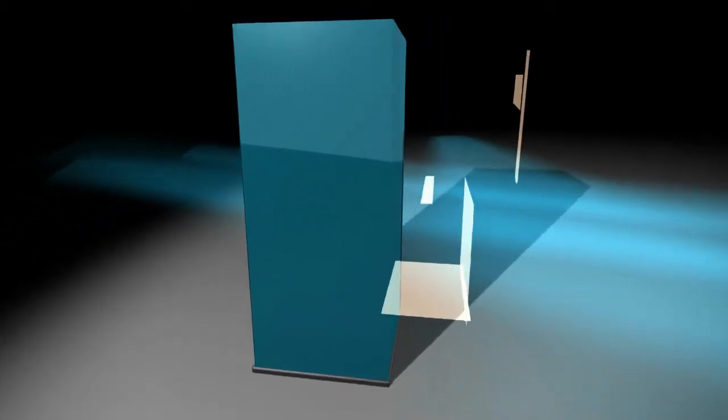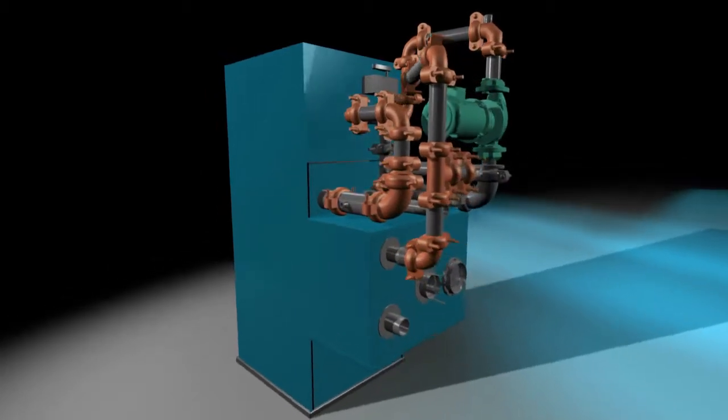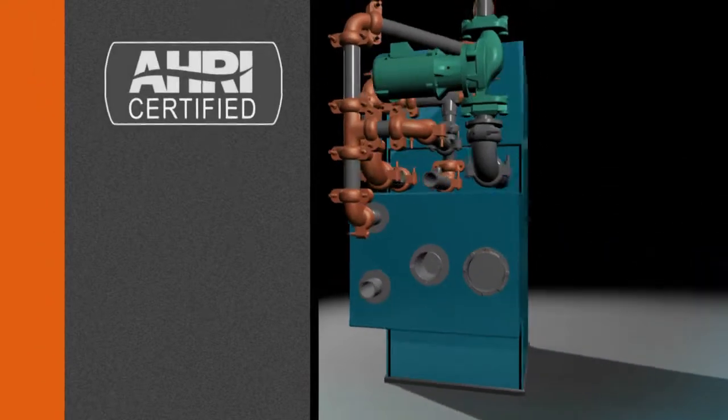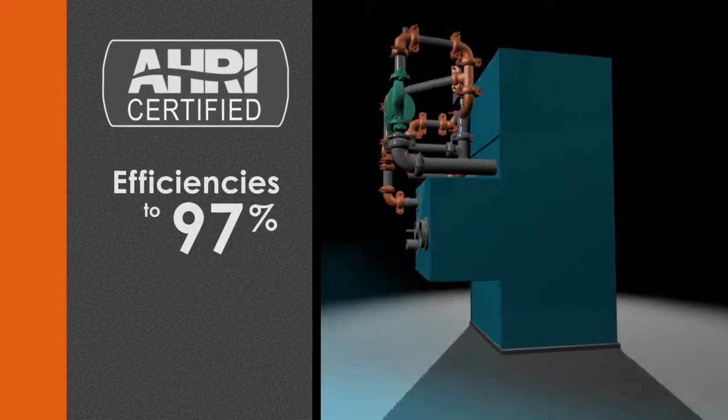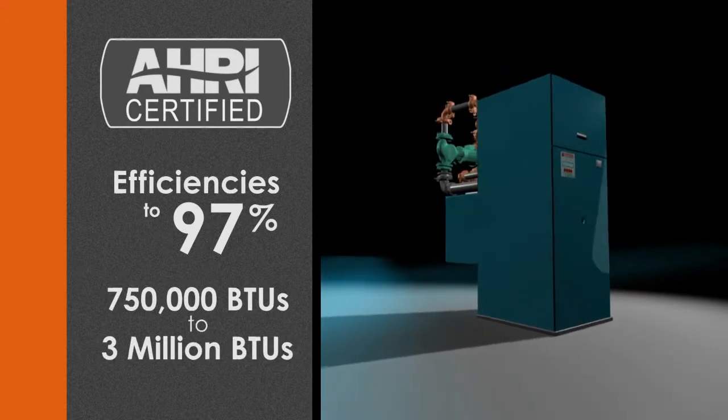Now, we've made the best even better. The new Condensing Evolution, or EVCA, boasts AHRI certification with efficiencies up to 97% and ranges from 750,000 BTUs to 3,000,000 BTUs.